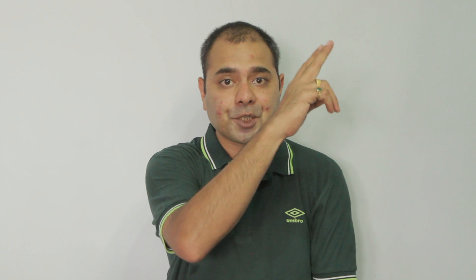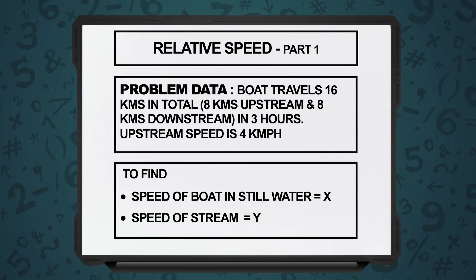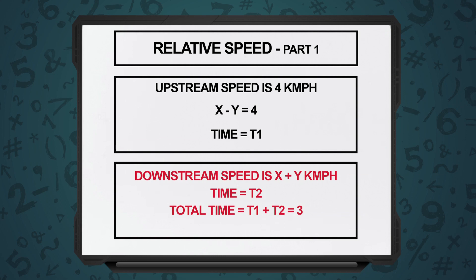Let us look at an example. A boat travels upstream and returns downstream in a total time of three hours. The total distance traversed is 16 kilometers and the speed upstream was 4 kilometers per hour. We need to find the speed of the boat in still water and the speed of the stream. Since the speed upstream is 4 kilometers per hour, it means x minus y equals 4 kilometers per hour.